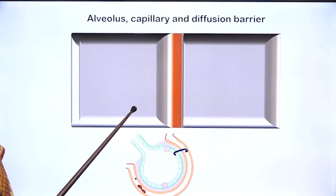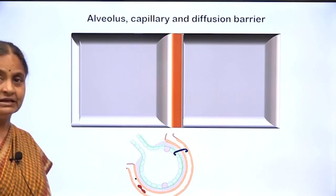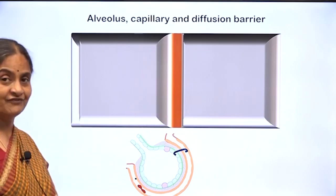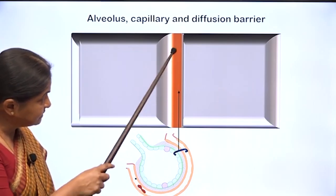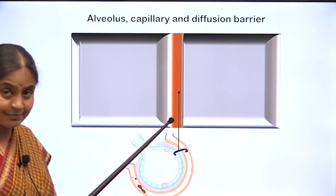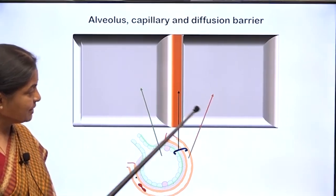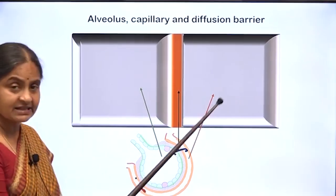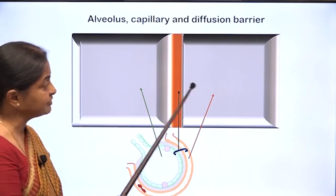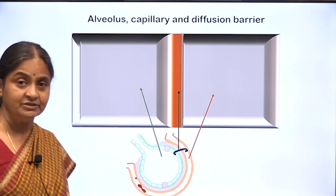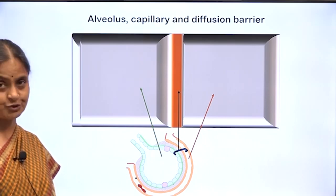We will use this cartoon to depict the compartments across which diffusion of oxygen takes place. Let this be the respiratory membrane — this is the alveolar compartment and this is the capillary compartment. Diffusion of oxygen has to happen from the alveolus into the capillary. Let us look at the determinants of diffusion.